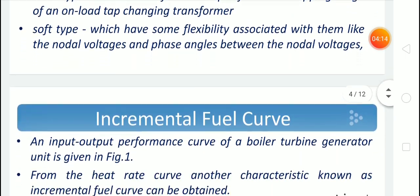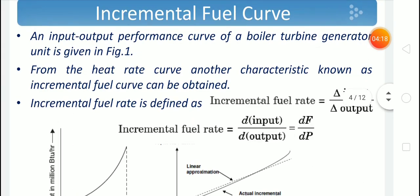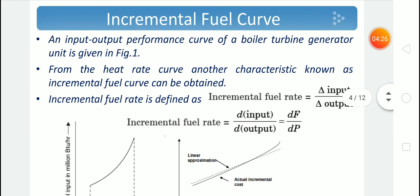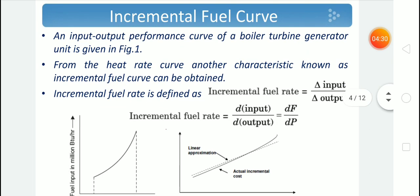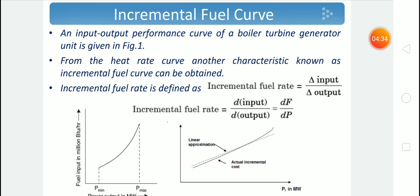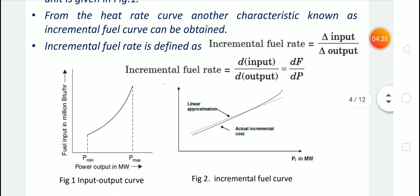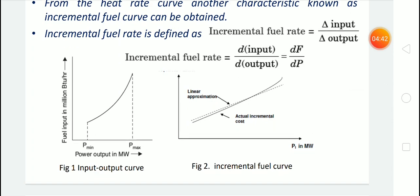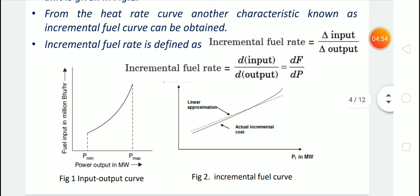Now we can move on to the economic load dispatch problem. One of the important parameters is incremental fuel cost. For finding the incremental fuel cost, we draw the incremental fuel cost curve. Figure 1 shows a fuel input versus power output curve — an input-output curve, which is a parabolic curve. If we differentiate this, we get the incremental fuel curve. The incremental fuel rate is the change in input divided by the change in output. When we differentiate the fuel input-output curve, we get the incremental fuel curve, which is almost linear.